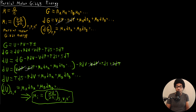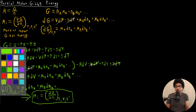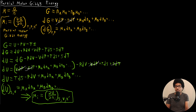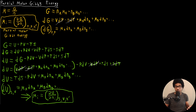So we now have two different ways that we can express the chemical potential, depending on which free energy is easier to measure or more readily available to us. We can express the chemical potential in either way. You could do this with any thermodynamic state variable.